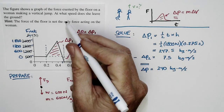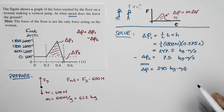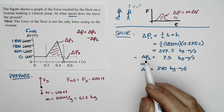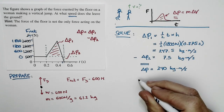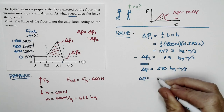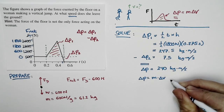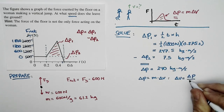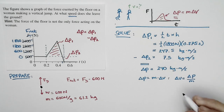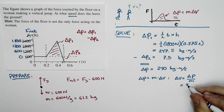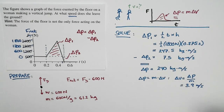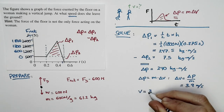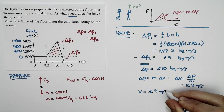We weren't asked for the change in momentum — we want the speed at which she leaves the floor. She started with a speed of zero and finishes with some final speed, so her change in velocity equals her final velocity. Delta P equals M times delta V, so delta V equals delta P divided by M. With her mass at 61.2 kilograms, we get a speed of 3.9 meters per second. That is the speed at which she leaves the ground.